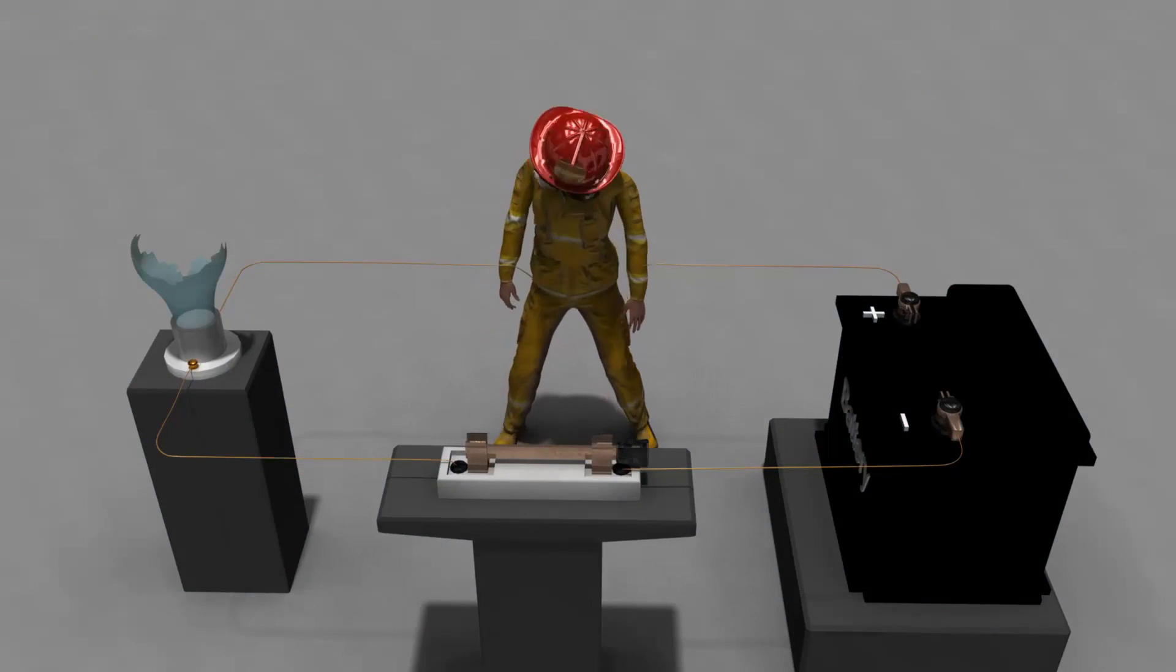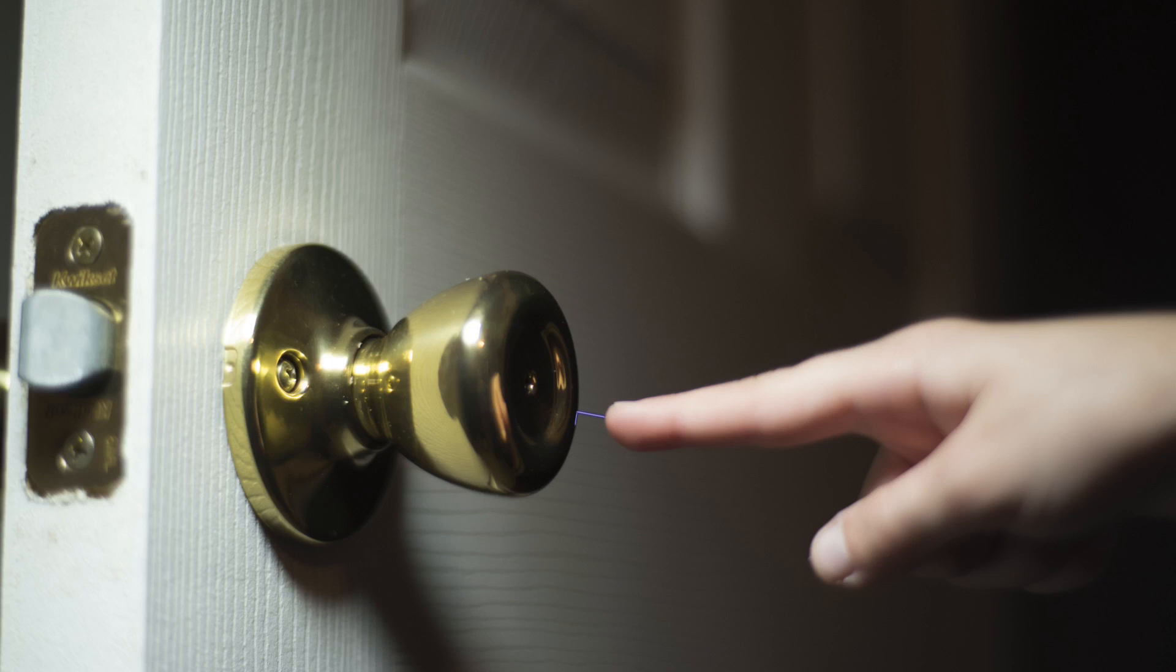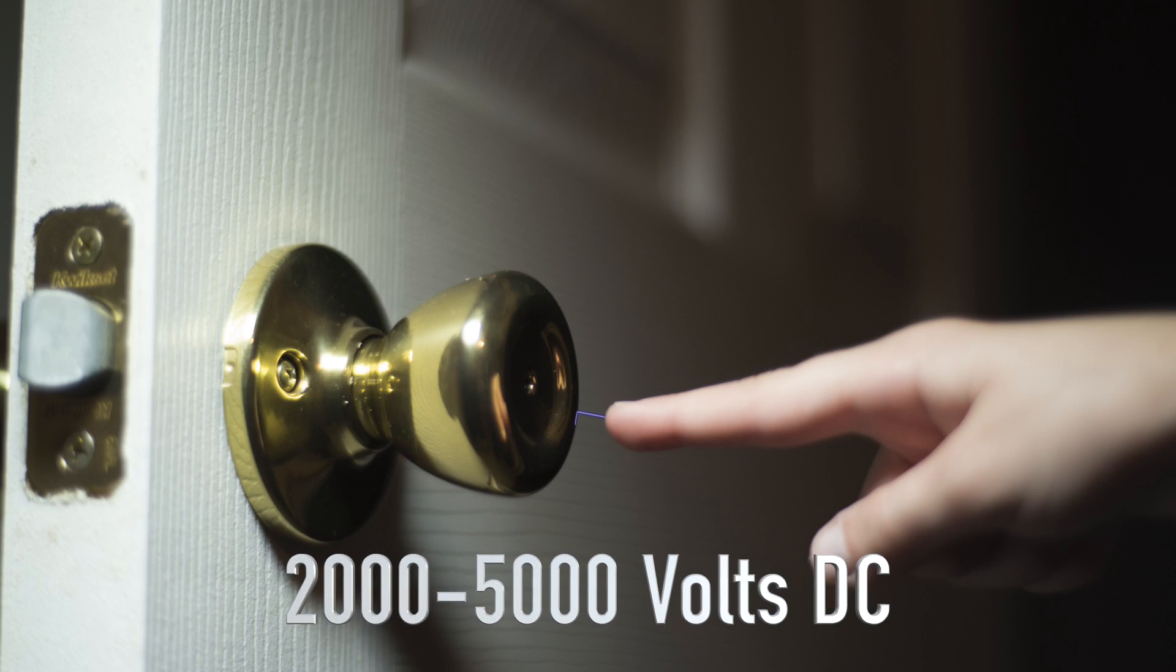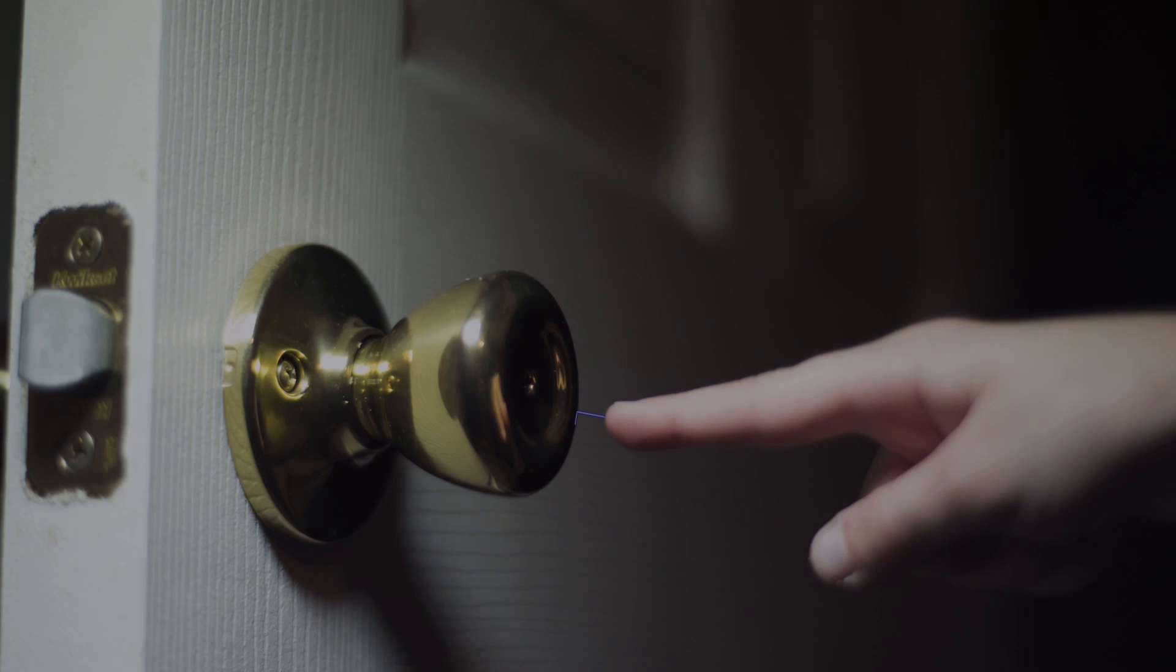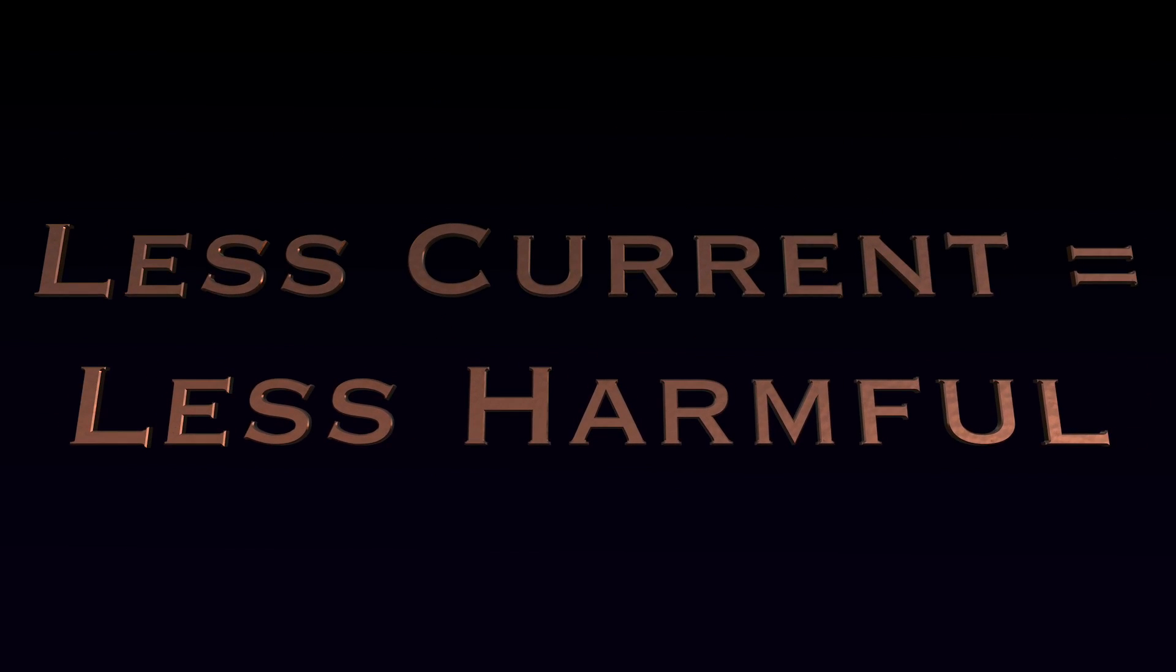Let's talk about a very high voltage shock that very likely each of you has experienced, a static shock. Now some of you may be saying there isn't much voltage in a little static shock, but you'll be surprised to hear that a simple static shock can be 2,000 to 5,000 volts DC. The reason we're all still here is that it's also a very small amount of current, usually less than 5 milliamps.